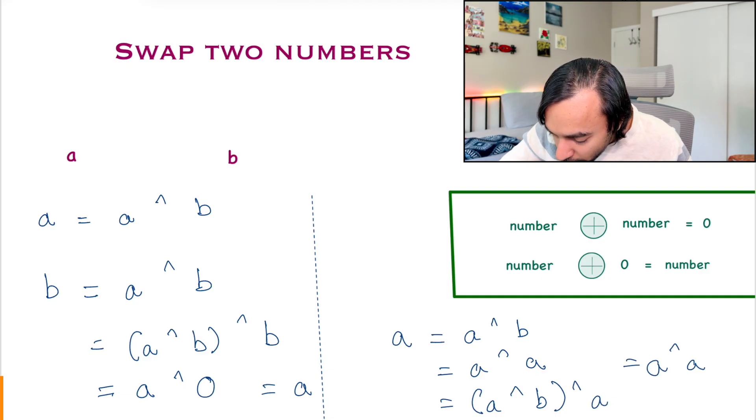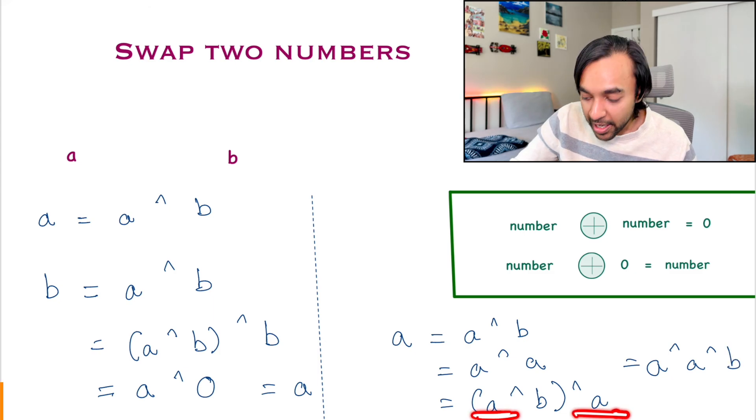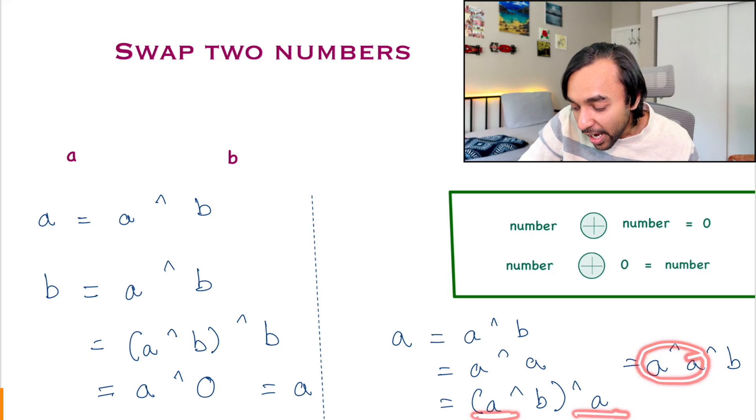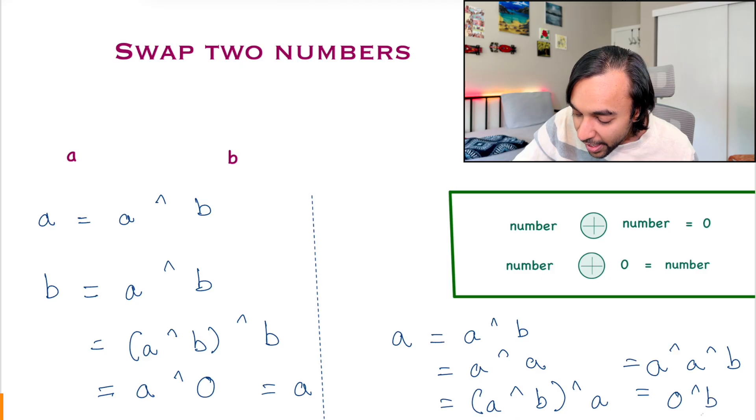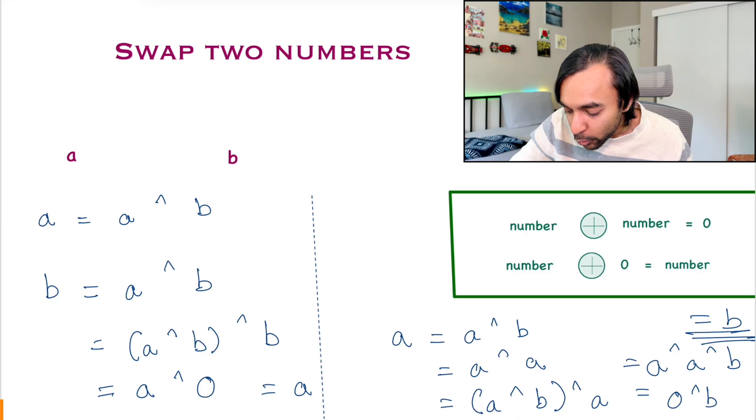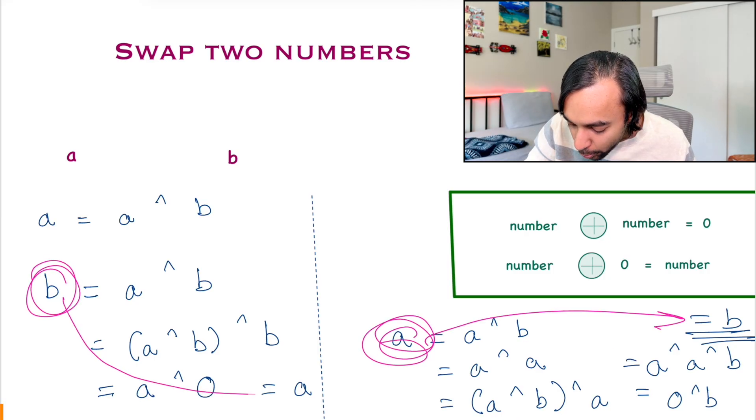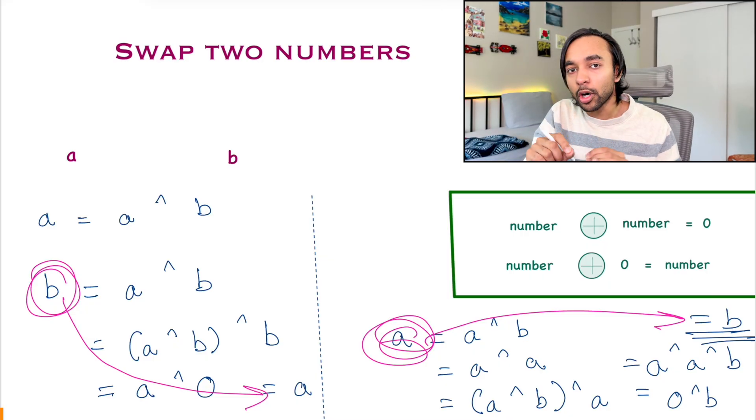So, what is this giving me now? It is actually giving me A XOR A XOR B. I have A XOR A. And, when I am XORing two same numbers, what do I get? I get a 0. So, this gives me 0 XOR B and 0 XOR B is actually B. So, I have now swapped two values. A is now pointing at B and B is now pointing at A.